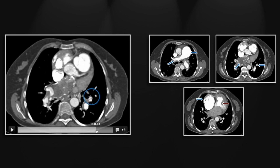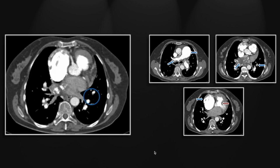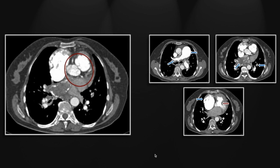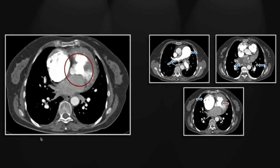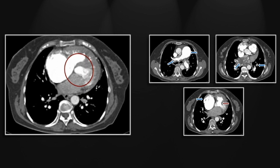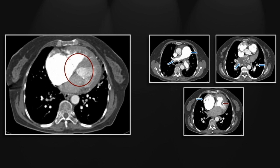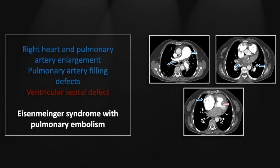Looking at the left lower lobe, that central filling defect has the appearance of an acute pulmonary embolism. The ventricular septal defect shows dense contrast passing from right to left, representing relatively acute right-to-left shunting most likely resulting from the acute pulmonary embolism and an abrupt increase in pulmonary hypertension exceeding arterial pressure, allowing shunting in the opposite direction to occur.